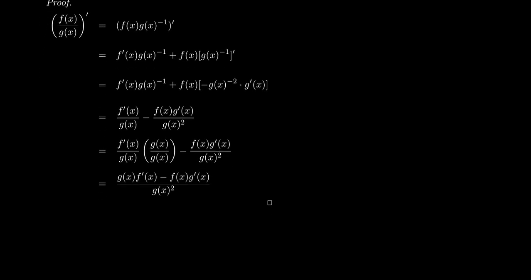So consider we want to calculate the derivative of f of x divided by g of x. Well, the first thing to observe is if you're dividing by g of x, that's the same thing as multiplying by g to the negative one power. Now, be careful here. In this context, this negative one superscript does not mean the inverse function. This actually means the negative one exponent. That is, this is a power right here. So you'll notice I've turned my quotient into a product.